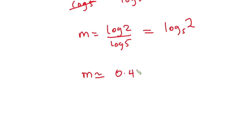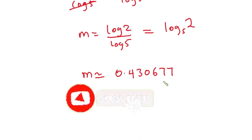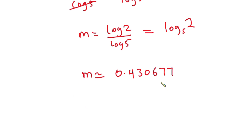If you type this on a calculator, m is approximately equal to 0.430. I hope you found this video useful — please give it a thumbs up and don't forget to subscribe to this channel. Have a nice day and see you again in the next video.